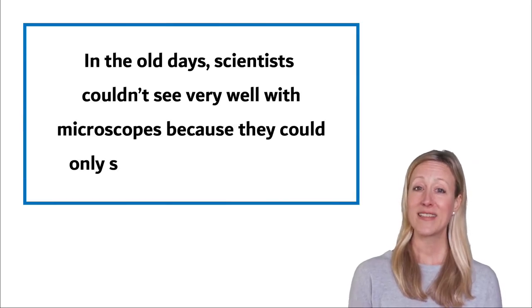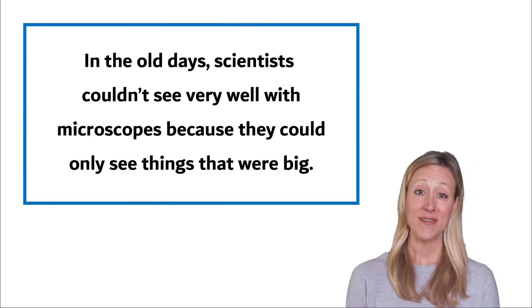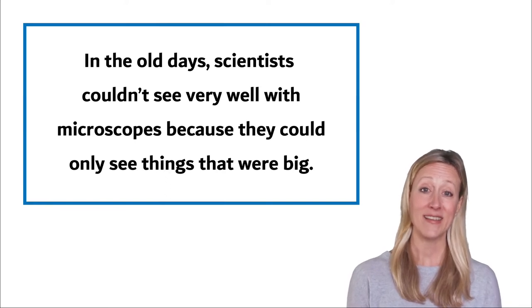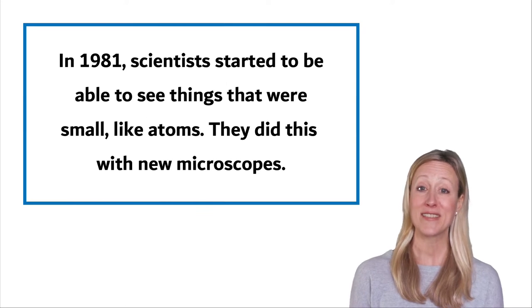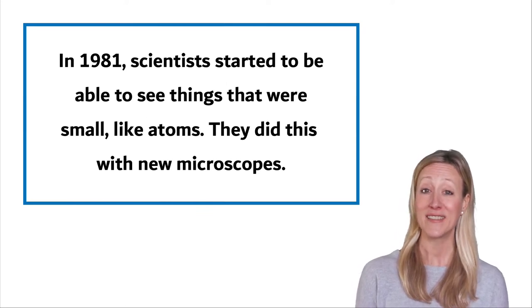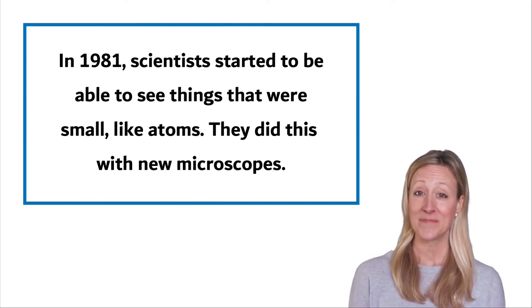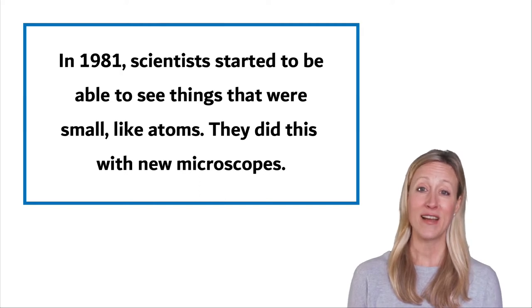In the old days, scientists couldn't see very well with microscopes because they could only see things that were big. In 1981, scientists started to be able to see things that were small like atoms. They did this with new microscopes.